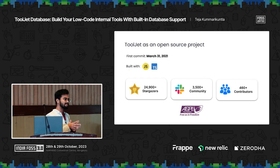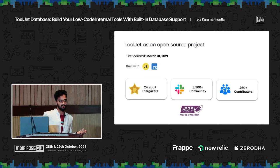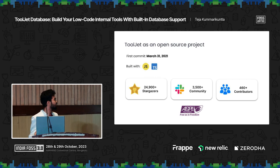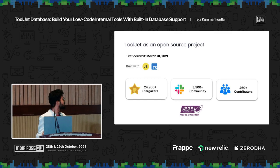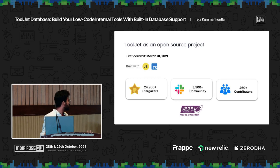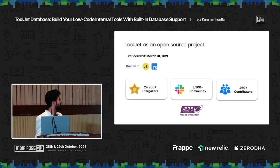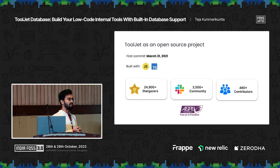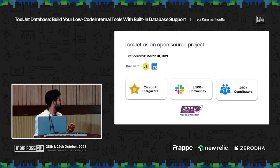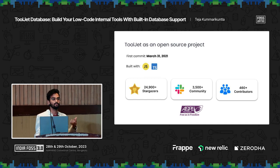Now let's look at ToolJet beyond the product — it's an open source project. The first commit was on March 30, 2021, so it's almost two years and nine months. It's built with JavaScript and TypeScript. We are close to 25,000 GitHub Stargazers, with 3,500-plus community members in our Slack. ToolJet is contributed to by 460-plus contributors, and that number is growing as Hacktoberfest comes to an end. It's licensed under AGPL.